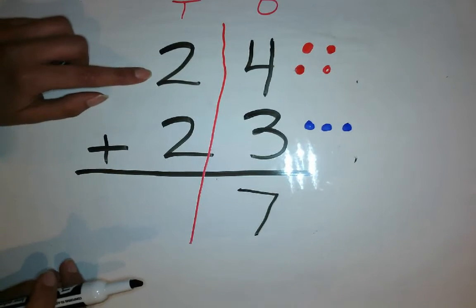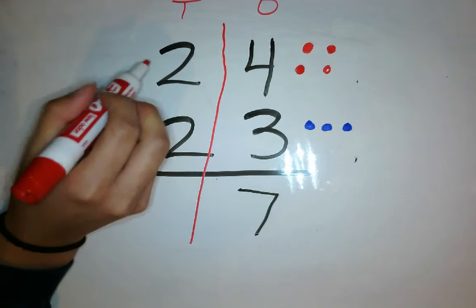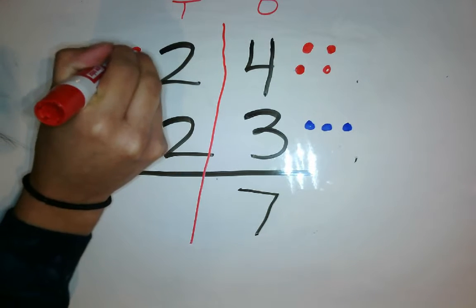Now I'm going to go over to this side, my tens side. So I want to do 2 plus 2. I'm using my 2 different colored markers. I have 2, so I need 2 dots.